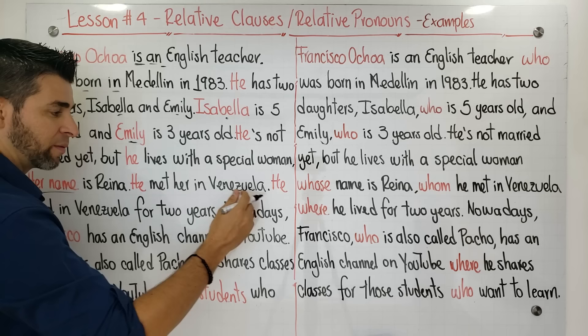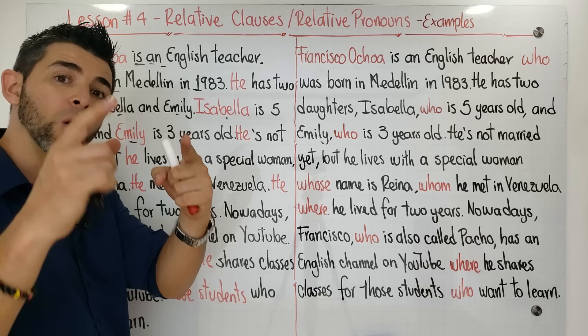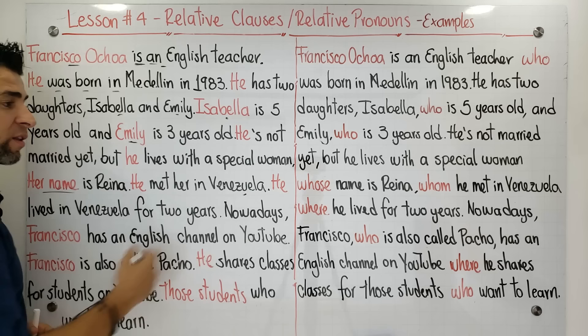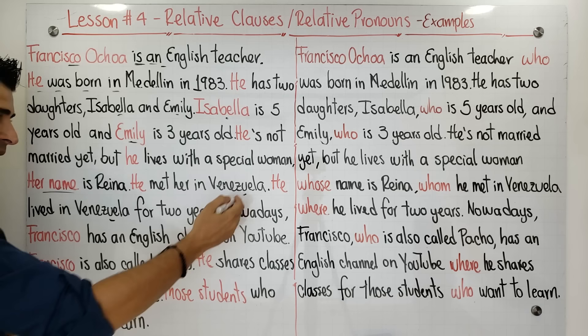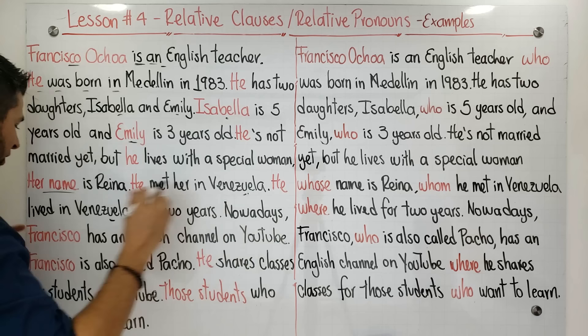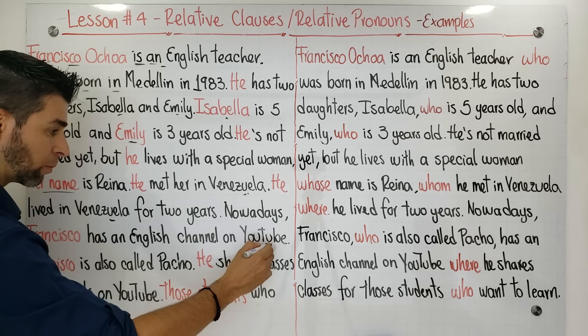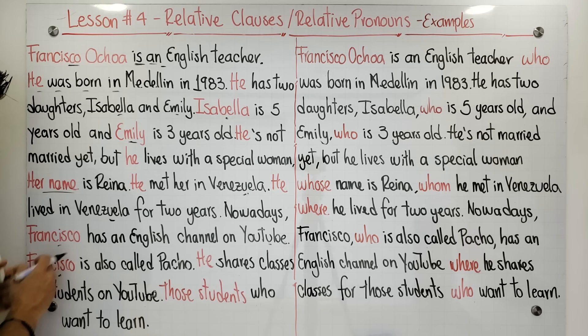'Her name is Reina' — subject, verb, and complement. 'He met her in Venezuela.' A special greeting to all those people from Venezuela — I hope everything changes for the better for all of you. 'He lived in Venezuela for two years.' Notice I'm repeating the country again.